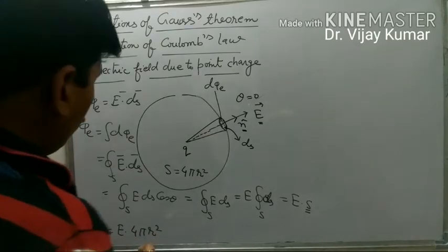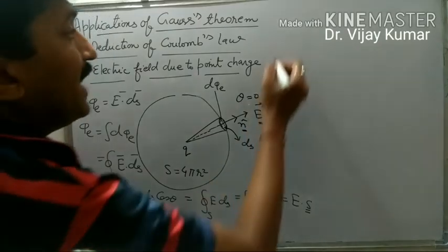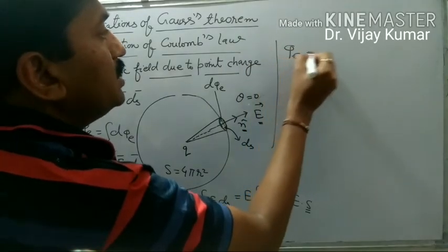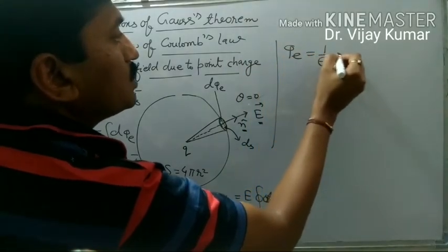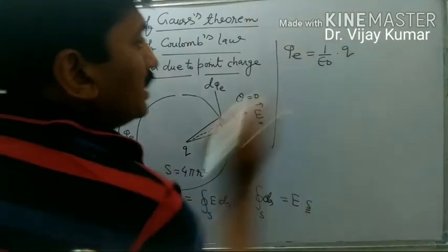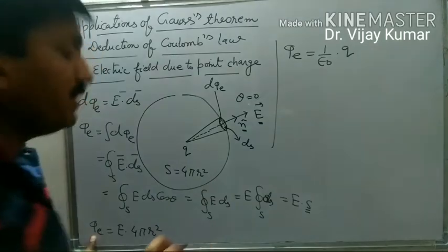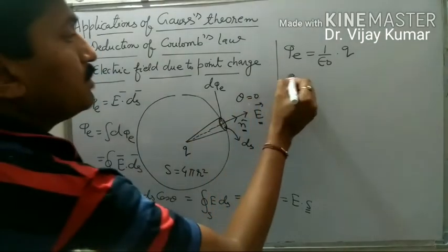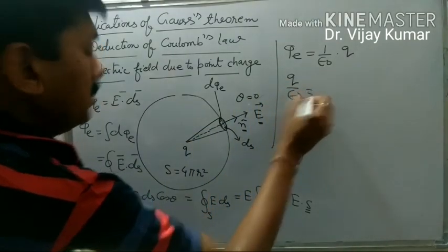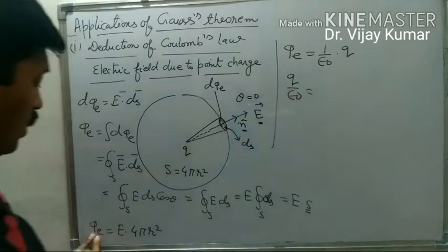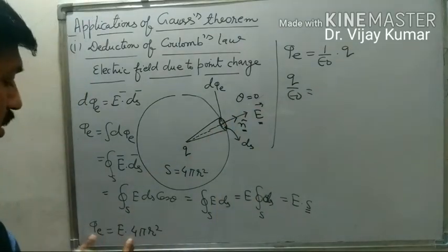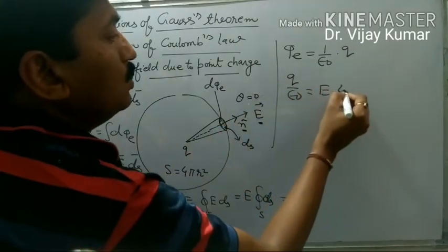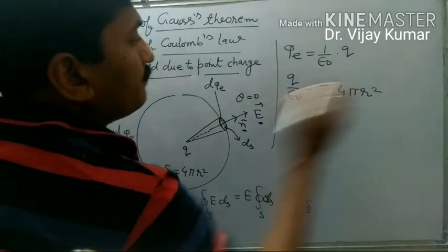As per Gauss theorem, phi e is 1 upon epsilon naught times the charge enclosed by the surface. So we can put q upon epsilon naught equal to E into 4 pi r square.